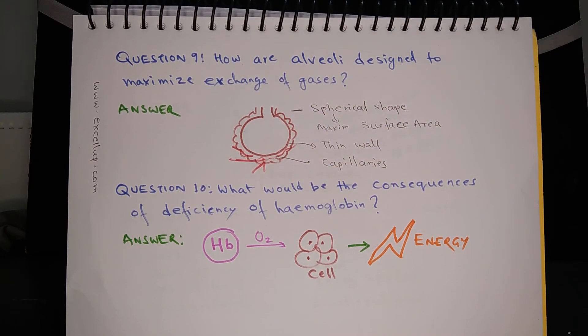Question 10: What would be the consequences of deficiency of hemoglobin? Hemoglobin carries oxygen and that oxygen reaches the cell where the respiration takes place to provide energy to cells and in turn tissues and organs. So in case of deficiency of hemoglobin, less amount of oxygen will reach cells, so cells will not be in a position to produce the required energy. A person suffering from hemoglobin deficiency will feel lethargic, will readily get tired, and won't be able to do work which involves a lot of physical labor.